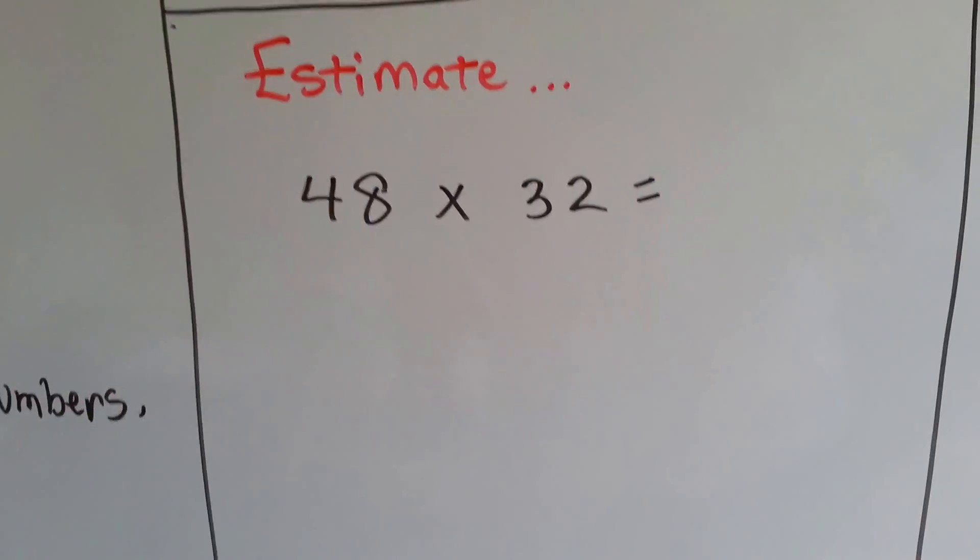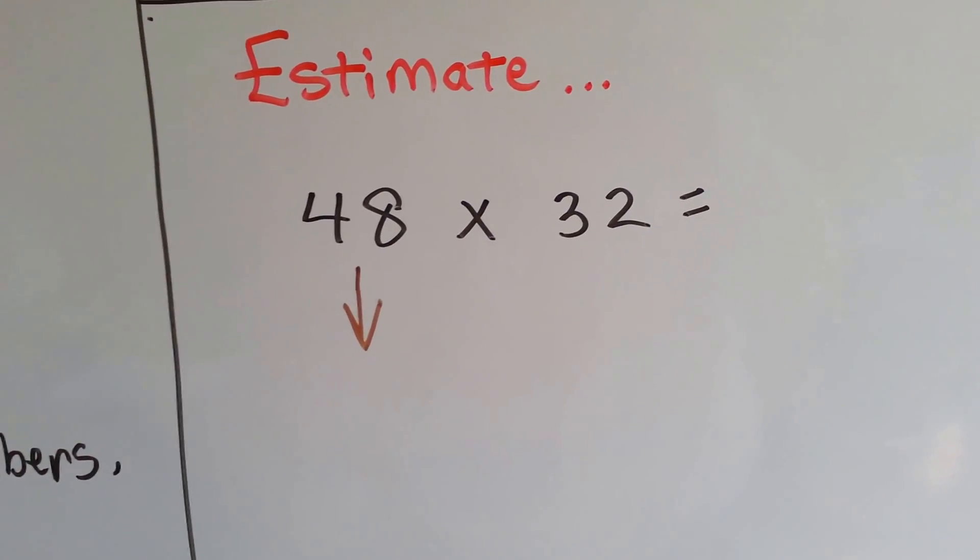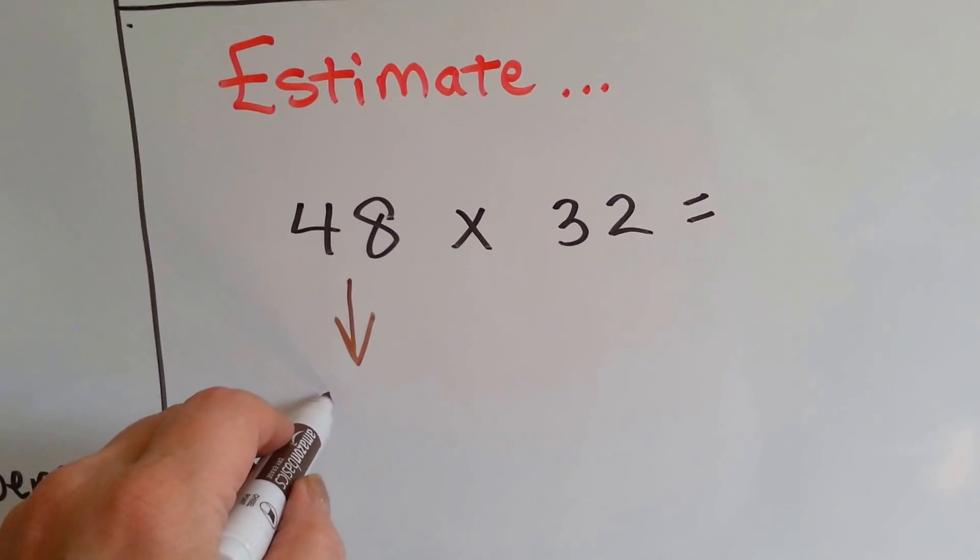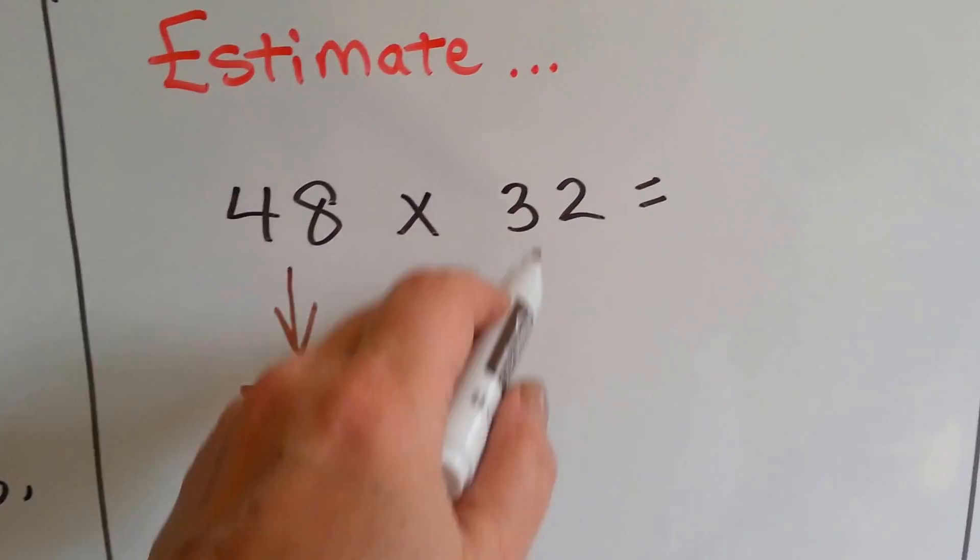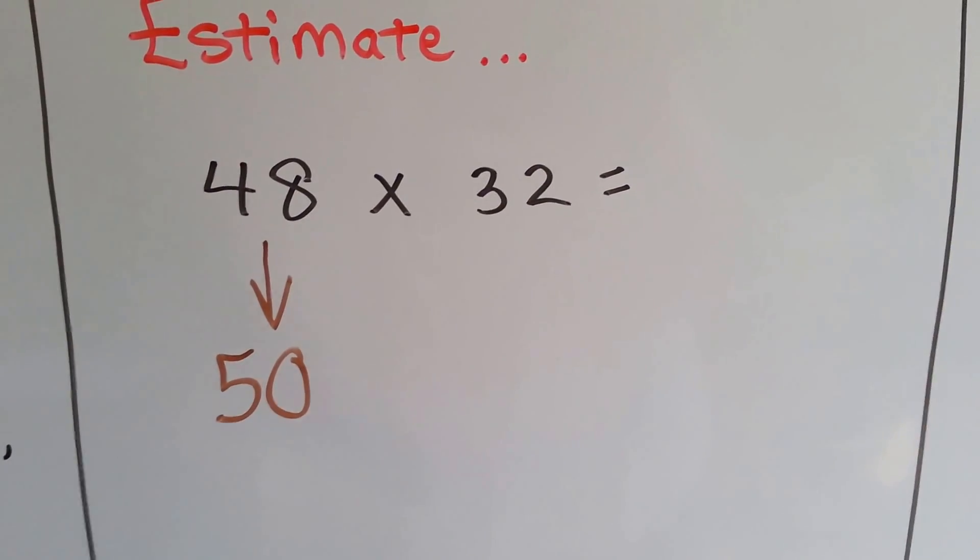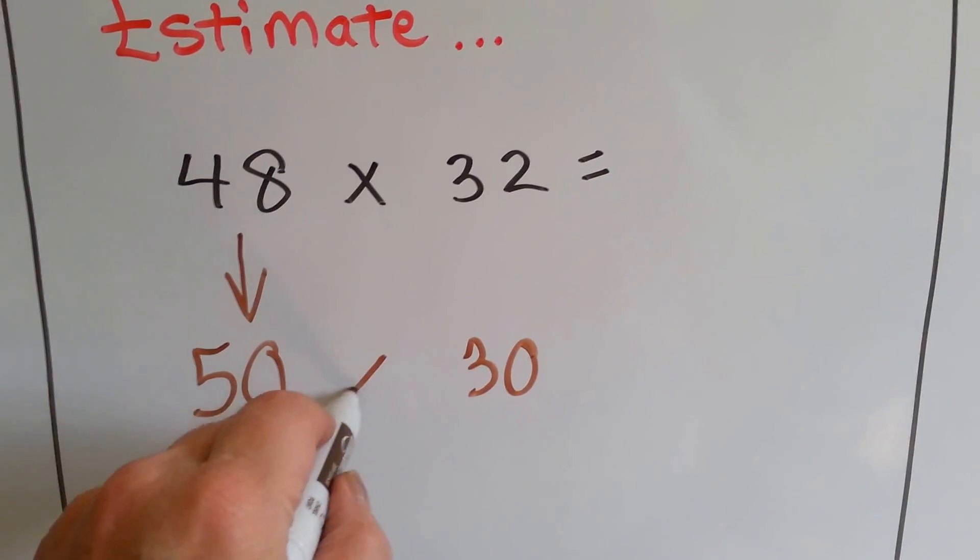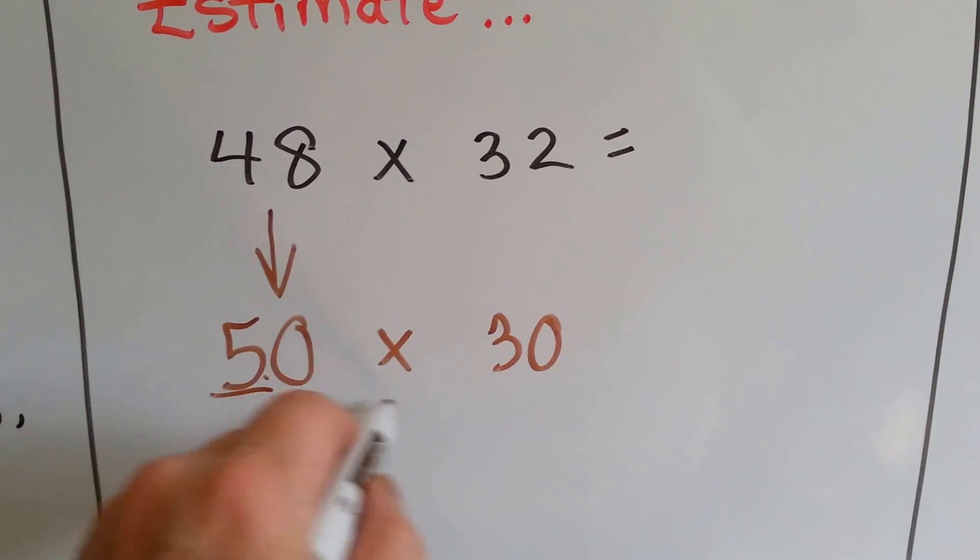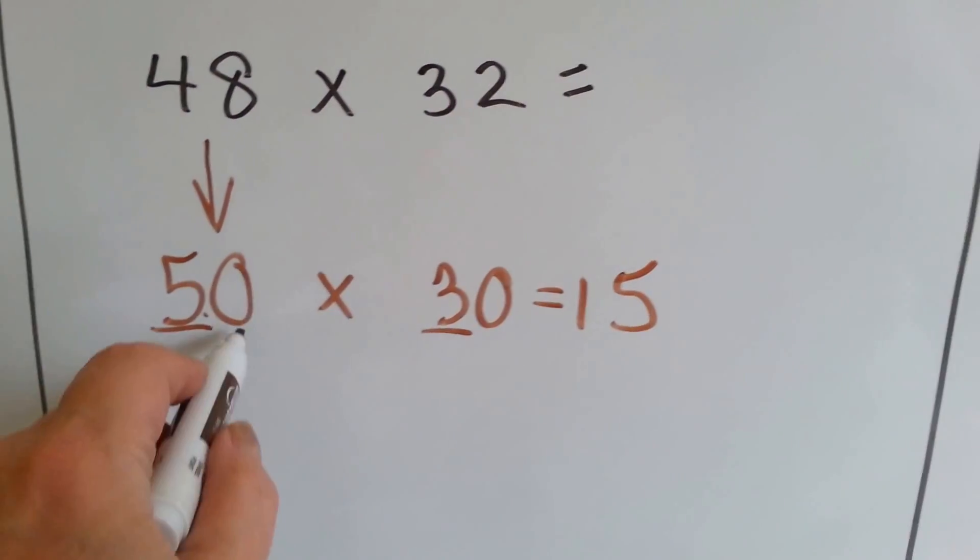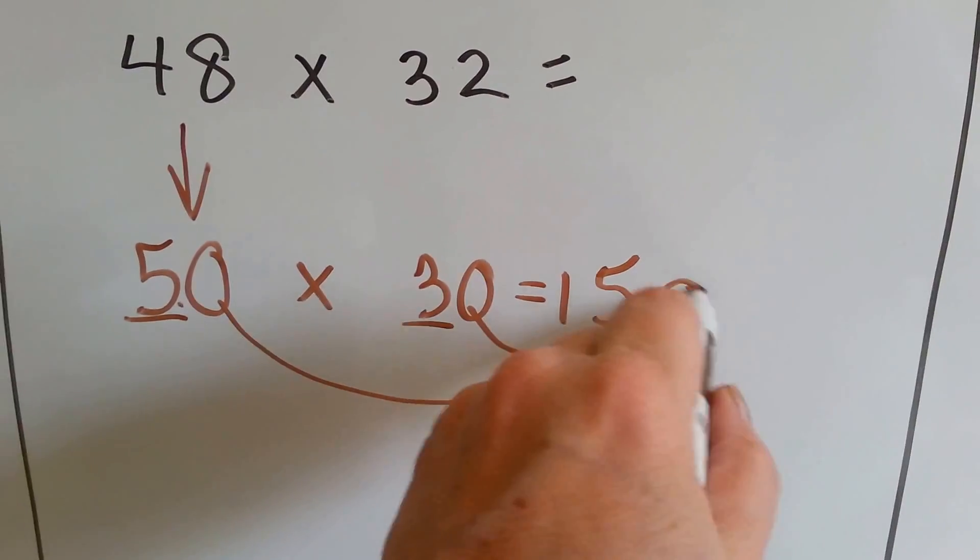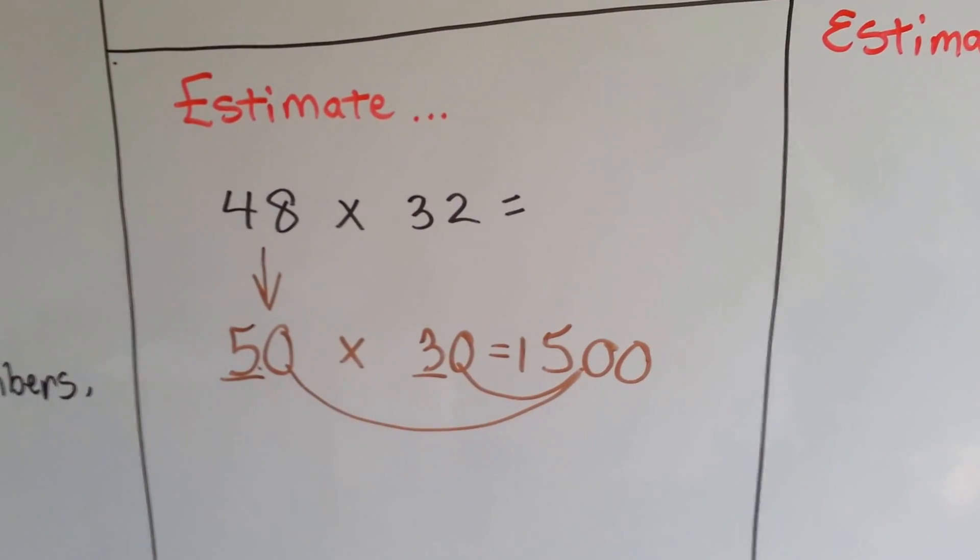Let's see if we could try doing this one. What can forty-eight be close to? What do you think it'll round to for the estimate? The eight tells the four to go up to a five, and when it's finished with its job, it turns into a zero. So forty-eight is very close to fifty. Thirty-two is very close to which ten? Is it closer to thirty or to forty? It's closer to thirty. So what is fifty times thirty? Well, what's five times three? Five times three is equal to fifteen, and then we can add the zeros. And we get one thousand five hundred. You could almost do that one in your head.